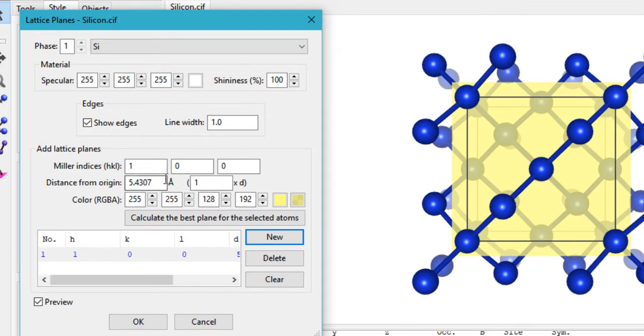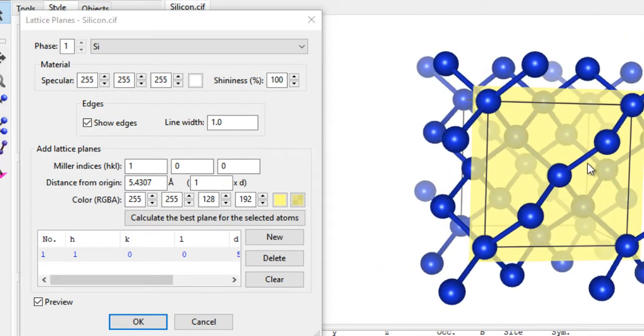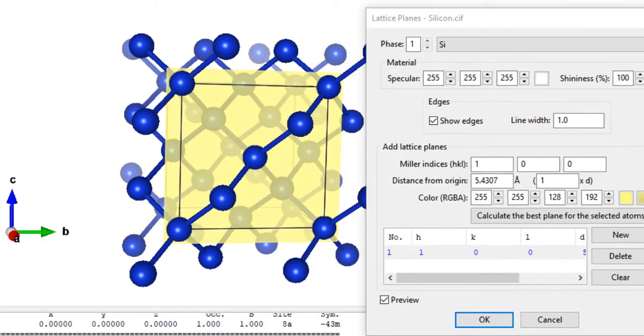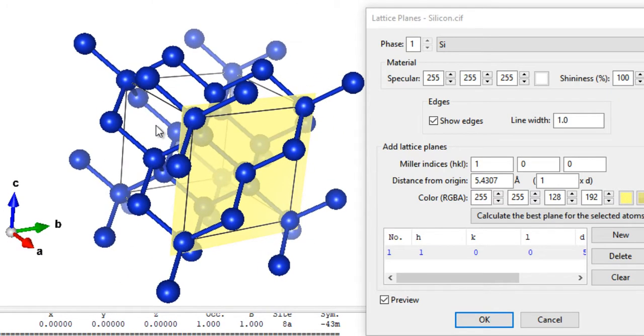Currently it's set to visualizing the 100 plane, as you can see. Here it is showing you the 100 plane. Let me just adjust a few things. Now as you can see, it is visualizing the 1 along the A axis and then 0 0 parallel to the B and C axis.